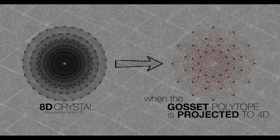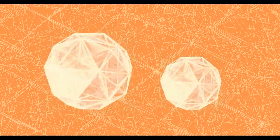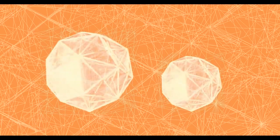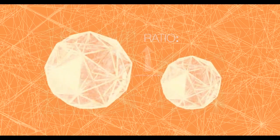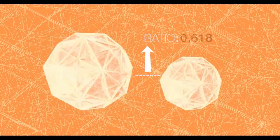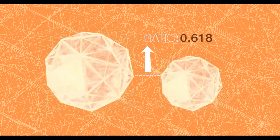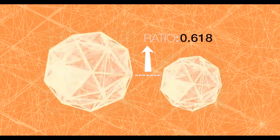When the Gossett polytope is projected to 4D, it becomes two identical shapes of different sizes. The ratio of their sizes is a unique number: 0.618 — also known as the Golden Ratio.